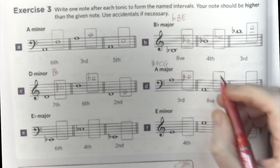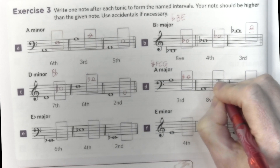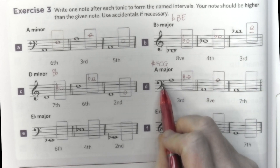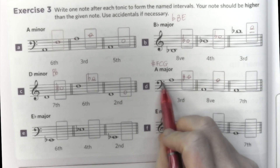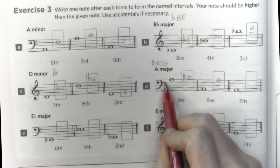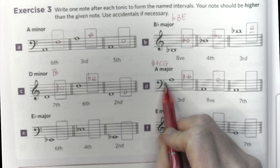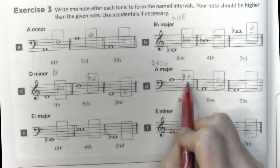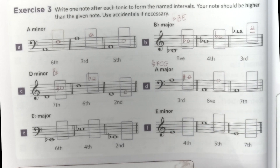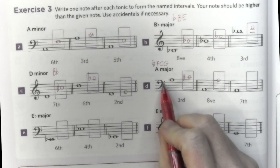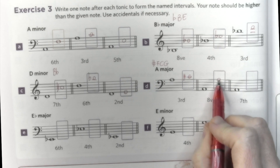An octave from La is just another La written in the right place. If you can't remember it, this is Fa. If you want to remind yourself how to read the notes in all the clefs, go and watch my videos — one A, one B, one C, and one D, linked in the description below or on the card up here. So Fa, Sol, La.